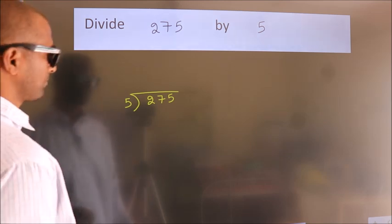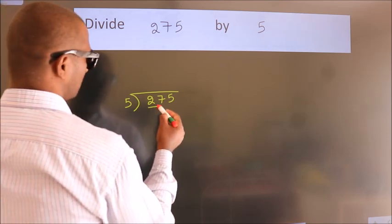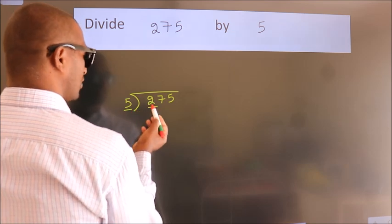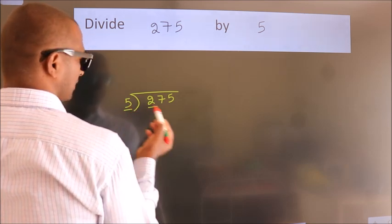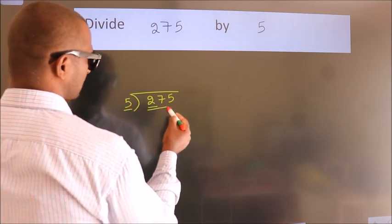Next, here we have 2, here 5. 2 is smaller than 5, so we should take 2 numbers: 27.